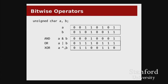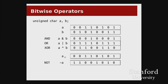Next is the XOR, or exclusive or operator, represented with the caret. This is like OR in the sense that if a or b is one, the result will be one. But if a and b are both one at the same time, XOR will be zero. You can think of XOR as: are the bits in a and b different? If so, result is one; if not, result is zero.